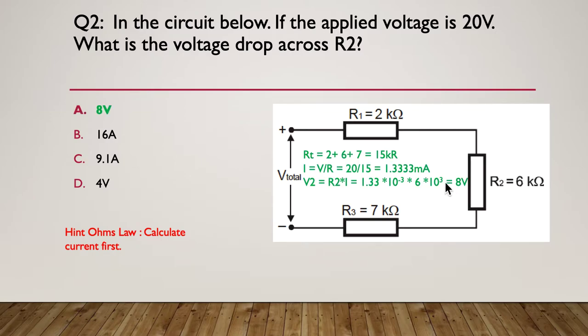So here's the answer, in green I've put the answer in the middle, it's eight volts. How do we get to eight volts? So R total is 15K, that's the two, the six, and the seven added together. Then I equals the volts divided by the R, so 20 volts divided by 15 gives me 1.33 milliamps in the circuit. So to find the voltage drop across R2, across the 6K, it's simply a matter of 1.33 milliamps multiplied by 6,000 ohms and that will come to eight volts.